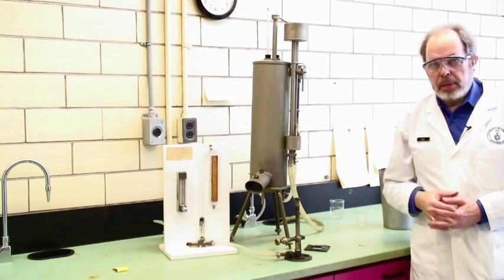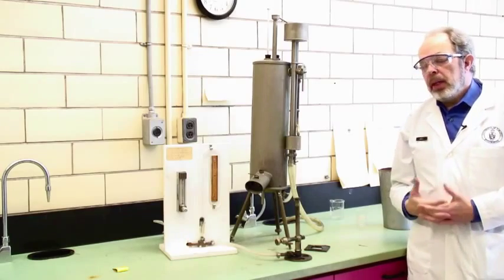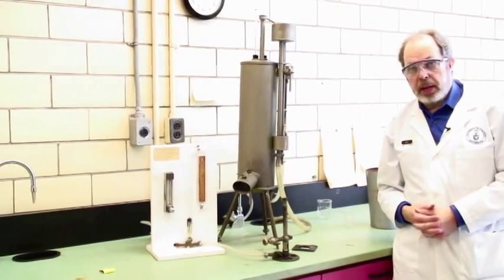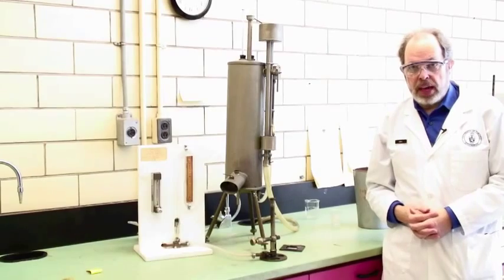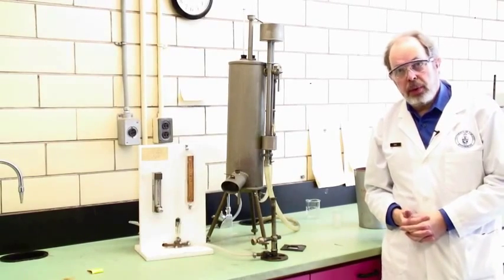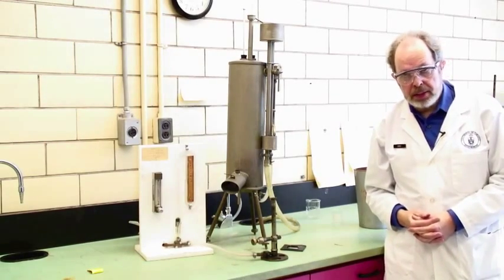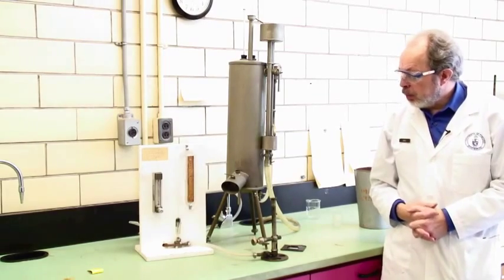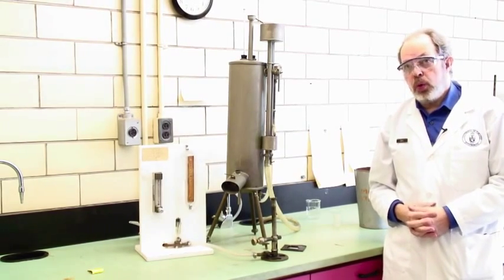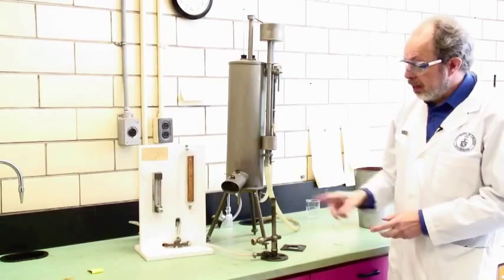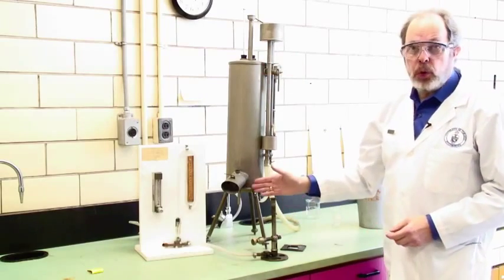This is a Junkers calorimeter which gives the amount of energy released by burning a known volume of gas. This video will show you how to use a Junkers calorimeter. It is fueled by natural gas and is cooled by tap water. It's basically a Bunsen burner with a cooling jacket.